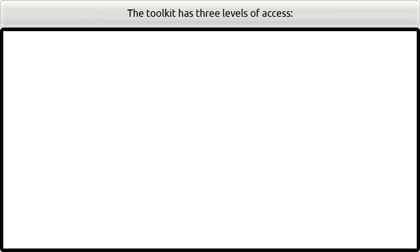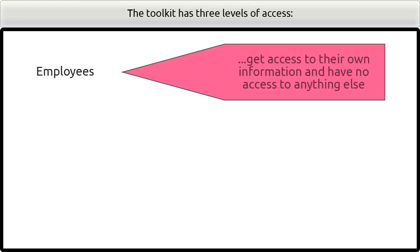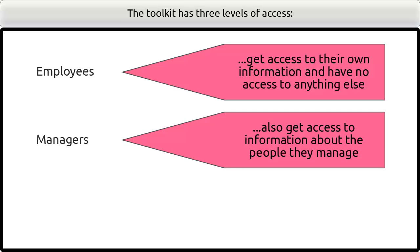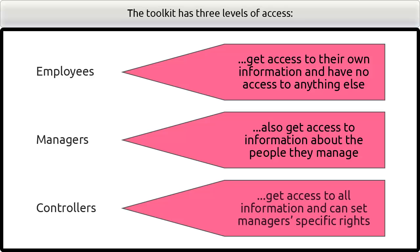The Toolkit has three levels of access. Employees get access to their own information and have no access to anything else. Managers also get access to information about the people they manage. Controllers get access to all information and can set managers' specific rights.